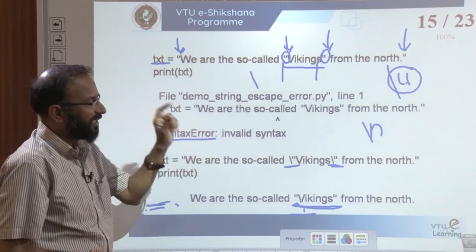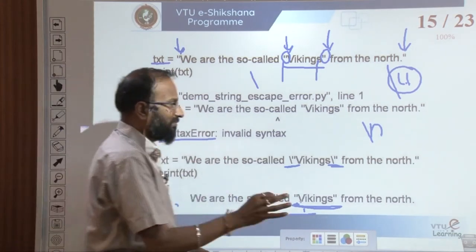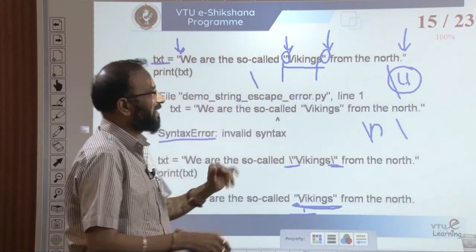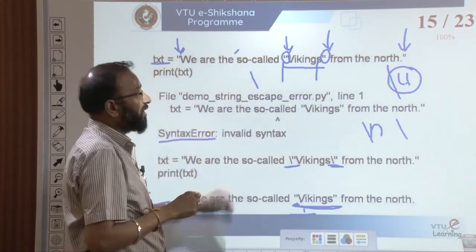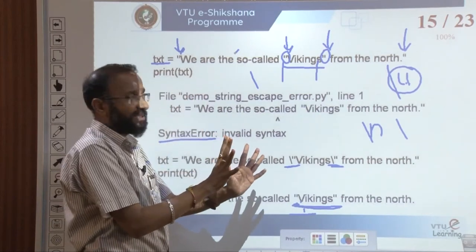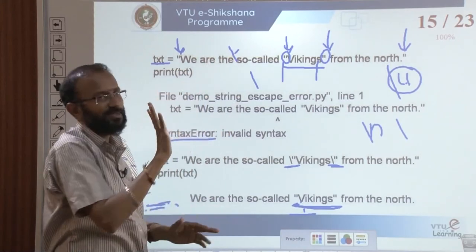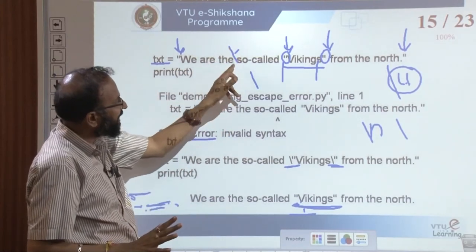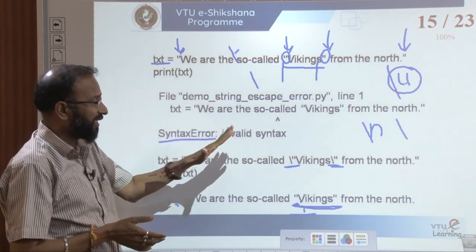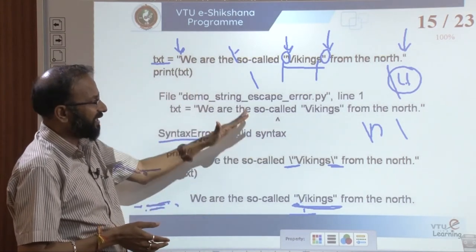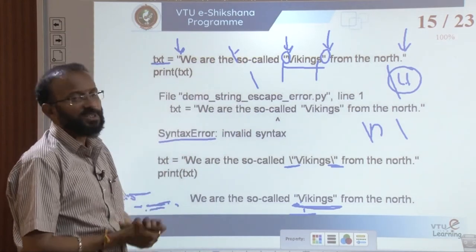In Python, to change the predefined meaning of a character, use a backslash. If you want single quotes as content, use backslash before single quote — otherwise it would be treated as start/end of a string. If you need quotes as part of the data content, use a backslash. Any changes to the predefined meaning of a character: best way is to use a backslash.